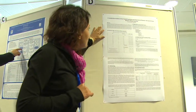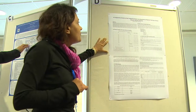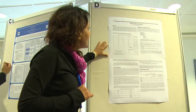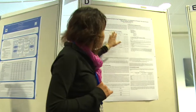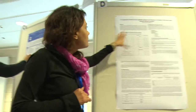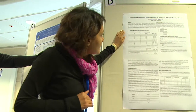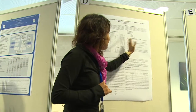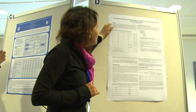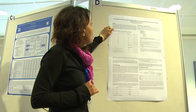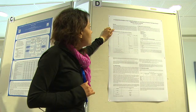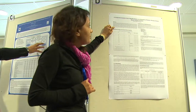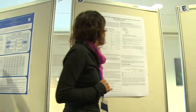Looking at the poverty profile of the seven African countries in the study, the seven countries are Cote d'Ivoire, Ghana, Liberia, Mali, Nigeria, Senegal, and Sierra Leone.